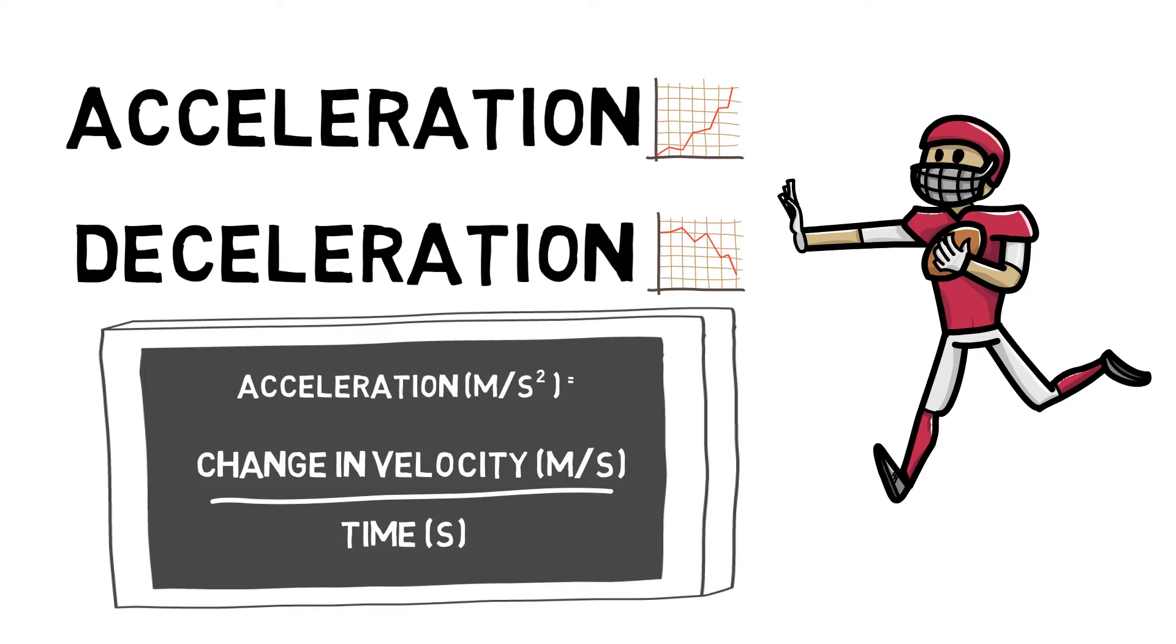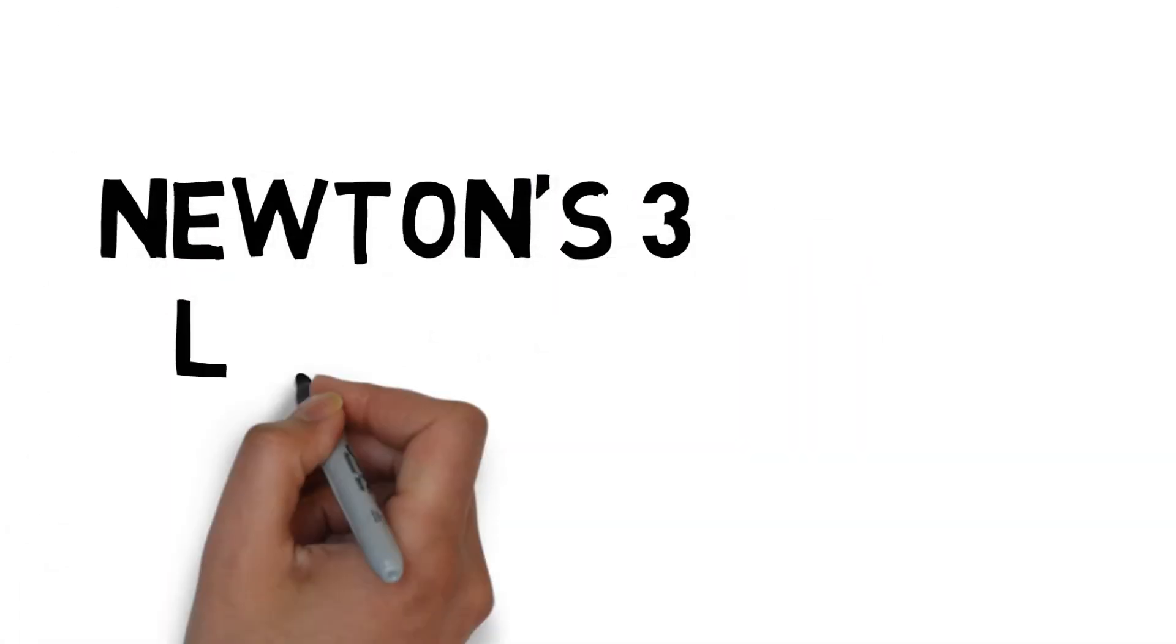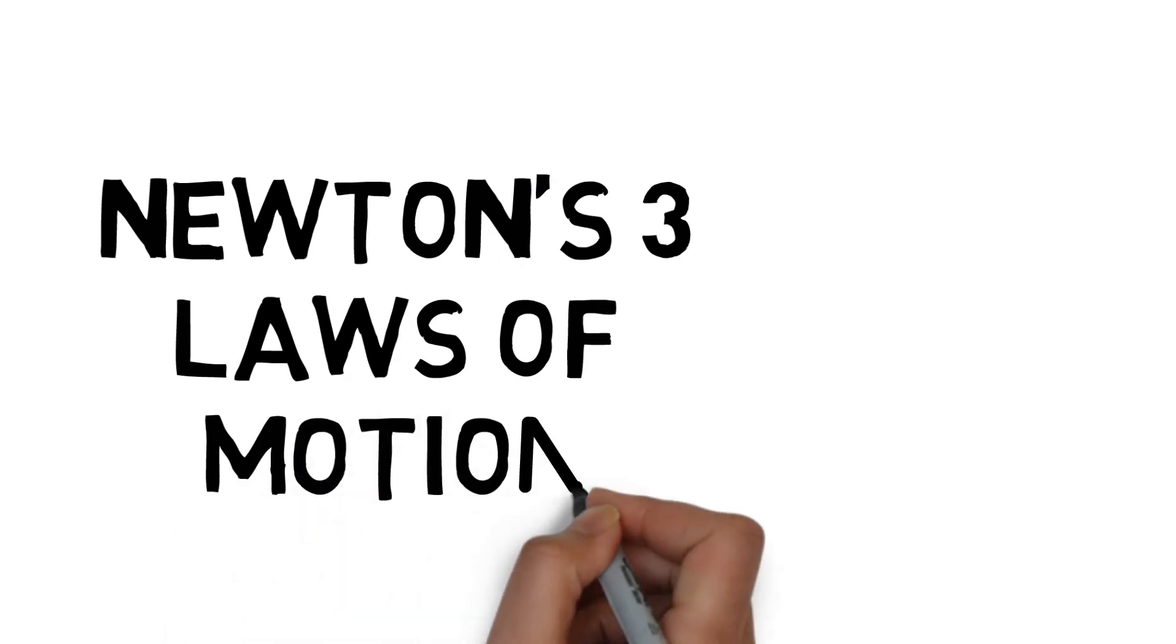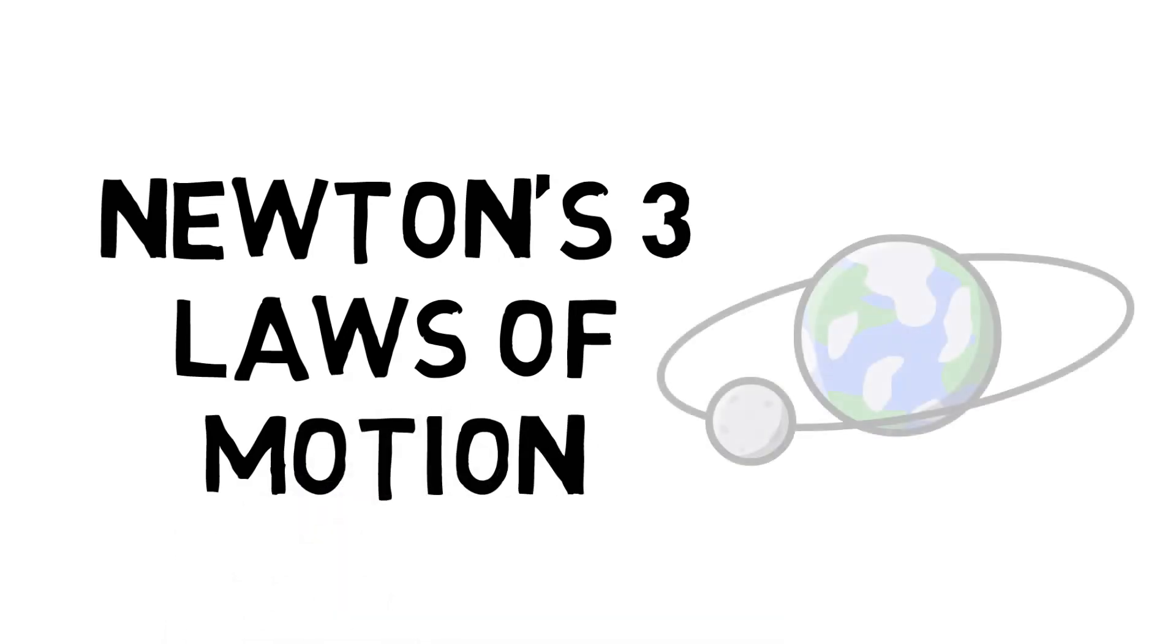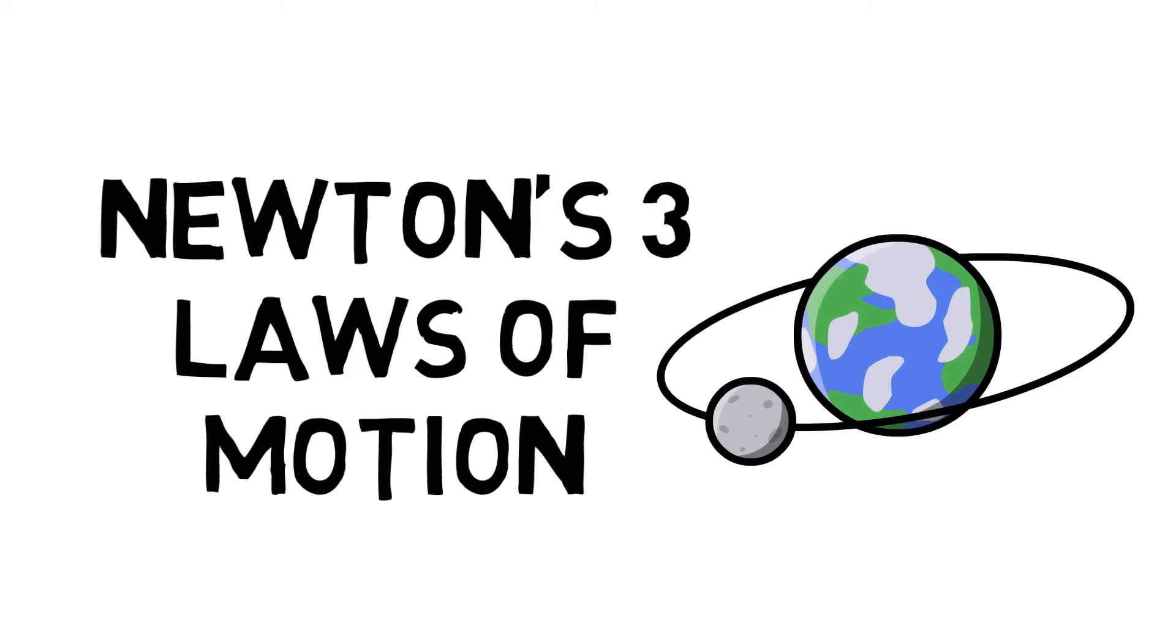In order to further understand linear motion, we have to take a look at Newton's laws of motion. It is these three laws that explain everything we see around us, such as why things move the way they do, and why objects are just not floating around all the time.